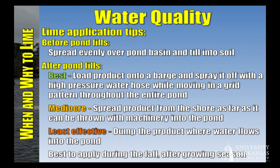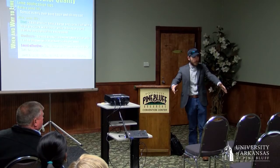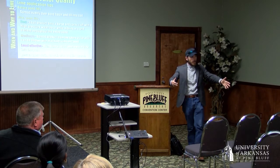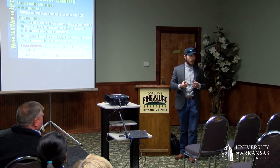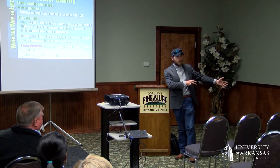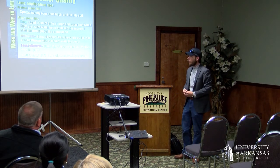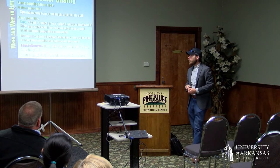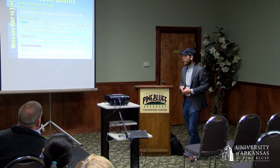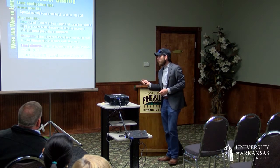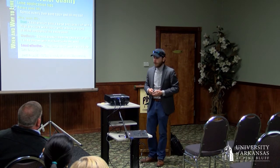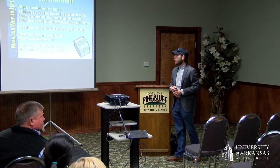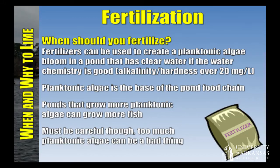If the pond is already full — which is the case 90% of the time — the best option is to load the product onto a floating barge, like a pontoon boat or detached dock section, and use a high-pressure water hose to spray it off as you push the barge in a grid pattern. It's cumbersome and takes a long time but it's the best strategy. A mediocre alternative is having a spreader truck drive along the pond edge and shoot it in, though that misses the deeper acidic areas.